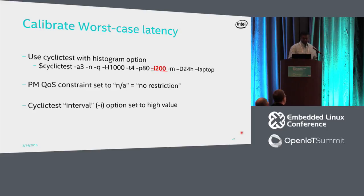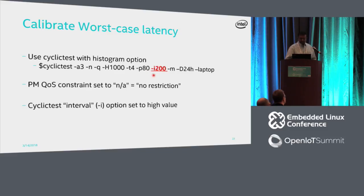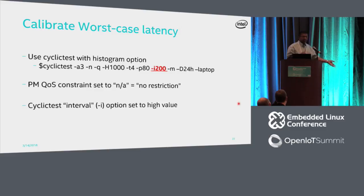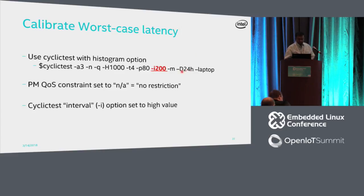The wiki page gives more details. The key parameter in cyclic test is the interval — the argument is in microseconds. Cyclic test sleeps for this interval in a loop, wakes up, checks the time, and calculates the difference between the expected sleep duration and the actual wake-up time — that difference is the jitter or latency. The longer we run it, the more reliable the data.